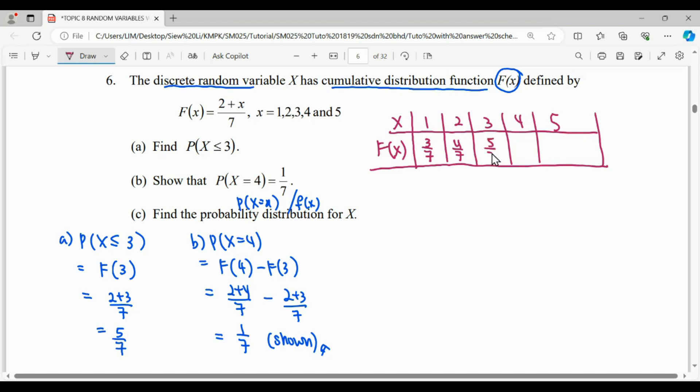When X equals 4, it will be 4 plus 2, which is 6/7. When it is 5, 5 plus 2 equals 7/7.